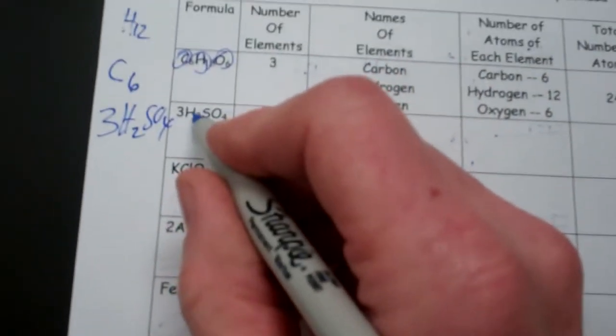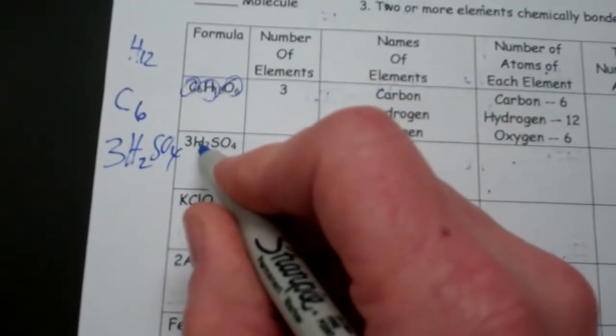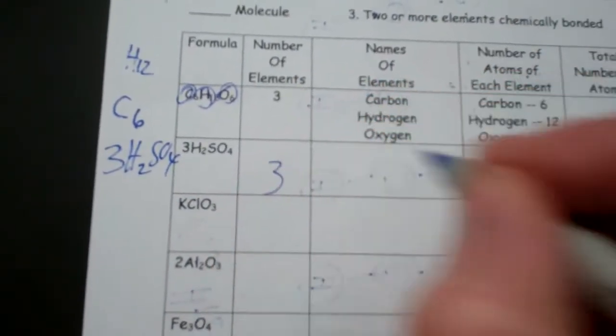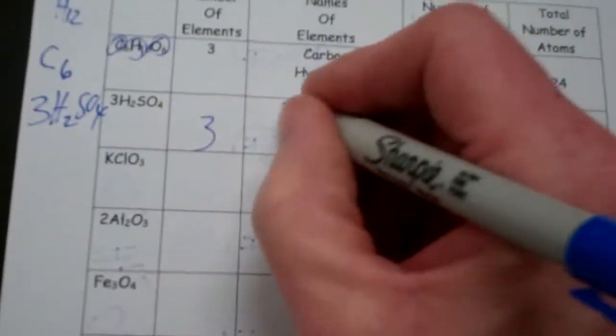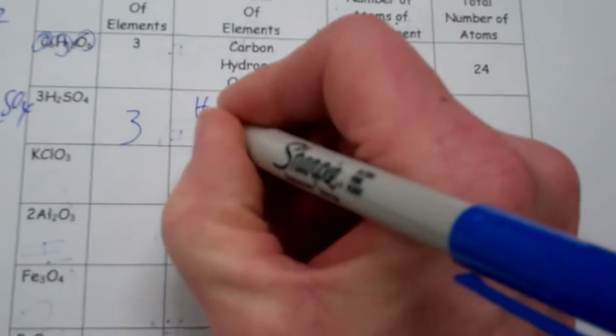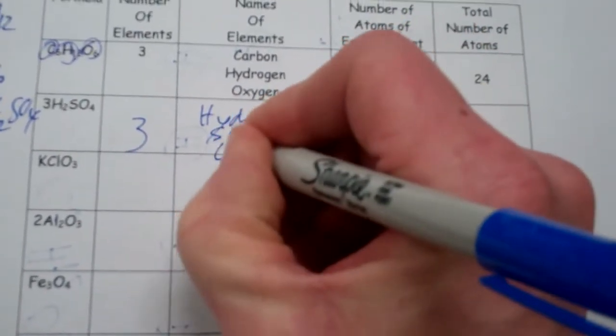So let's go through this one. How many elements are there? Well, there's hydrogen, sulfur, and oxygen. So there's three elements. Now what are the names of those? There's hydrogen, sulfur, and oxygen.